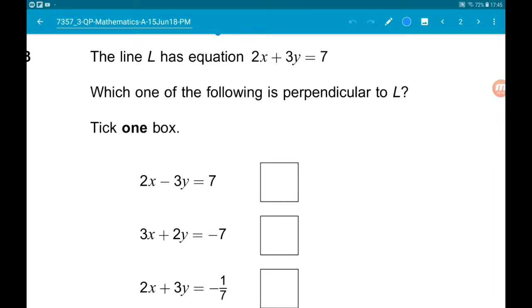So when lines are perpendicular, the gradients multiply together to minus 1.